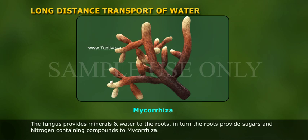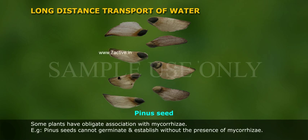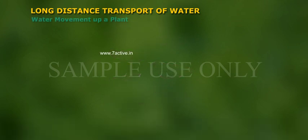The fungus provides minerals and water to the roots. In turn, the roots provide sugars and nitrogen-containing compounds to mycorrhizae. Some plants have an obligate association with mycorrhizae. For example, pinus seeds cannot germinate and establish without the presence of mycorrhizae.